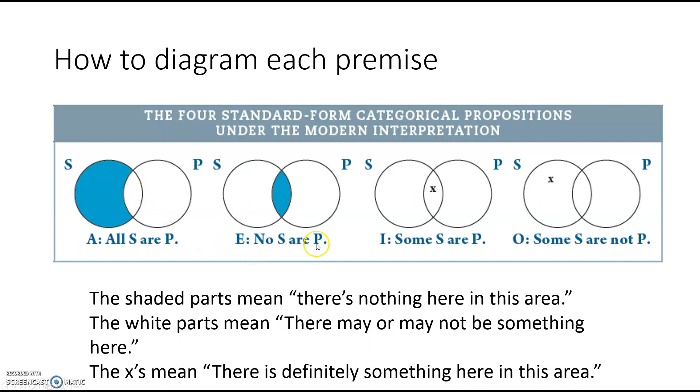Let's look at E statements. No S are P. Now we draw the same two circles, but the way we diagram it is we say there is nothing here in this part of S that overlaps with P. If there are any S's, they're over here. Now let's look at I statements. Some S are P. Well, in that case we put an X right here in the overlap area where S overlaps with P. There's some stuff here that's both. Now there may be stuff over here. There may be S's that are not P's, right? And there may be P's that aren't S's. But what we do know is that some S's are P's.